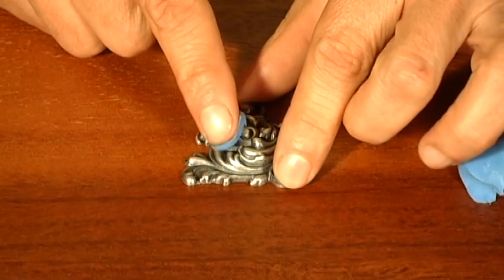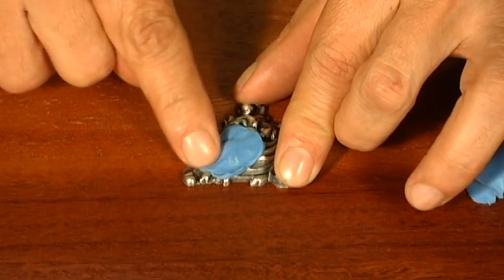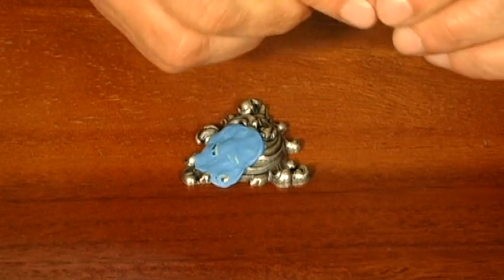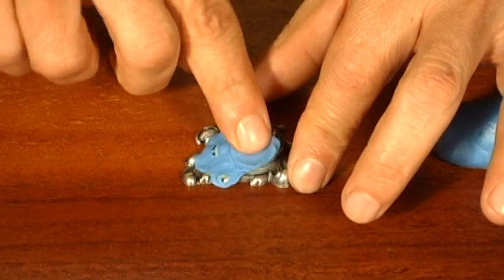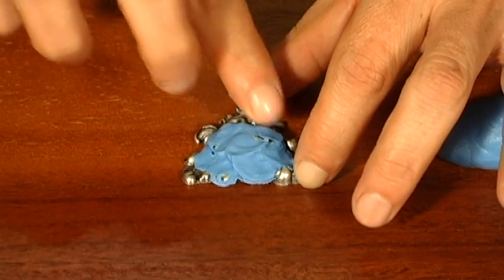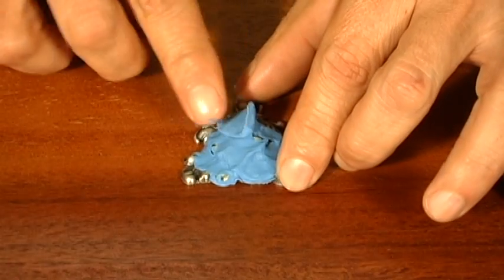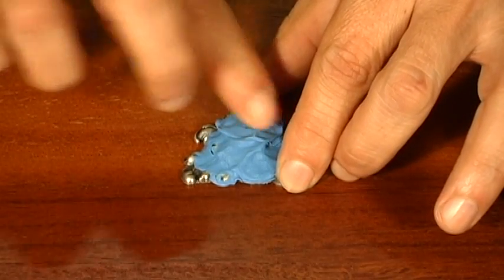To apply silicone plastique, take a small amount on the tip of your finger and work it into the surface of the object you want to duplicate. This step ensures that air is pushed out of the details and prevents bubbles from being trapped in the mold. We call this first application a skim coat.